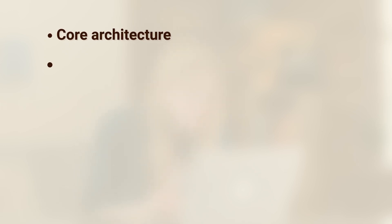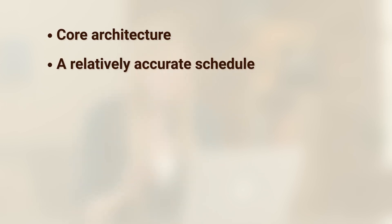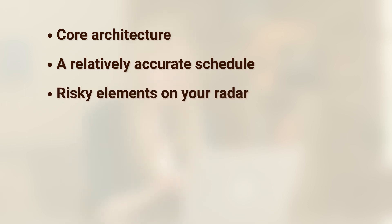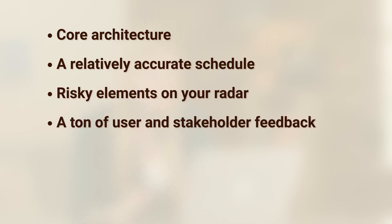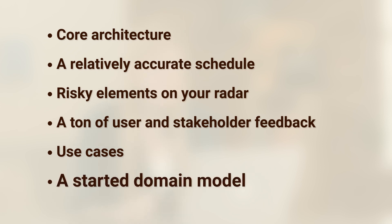This matters a lot once you start getting into database design. By the end of the Elaboration phase you should end up with six different items: Core Architecture, a relatively accurate schedule, risky elements on your radar, a ton of user and stakeholder feedback, use cases, and a started domain model.